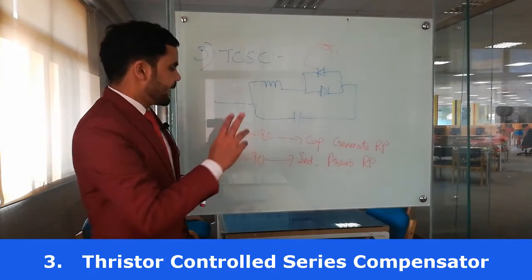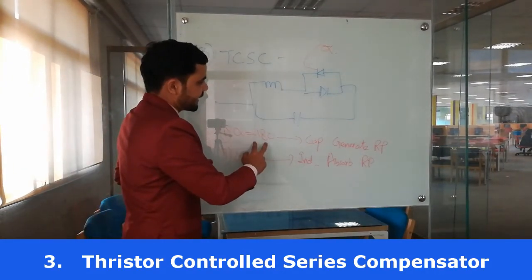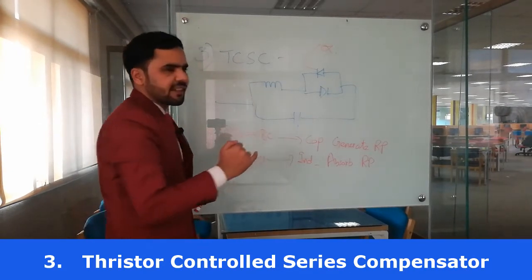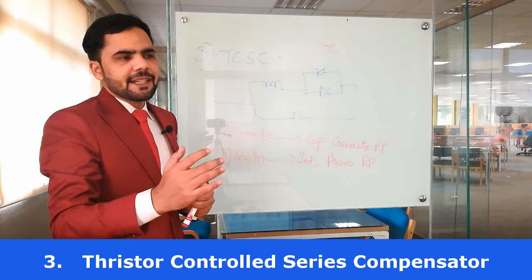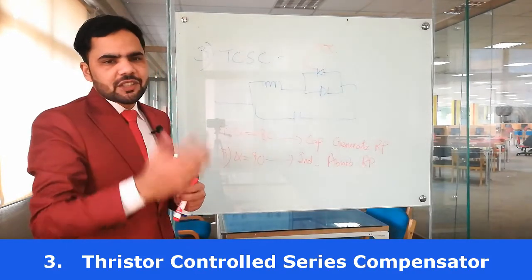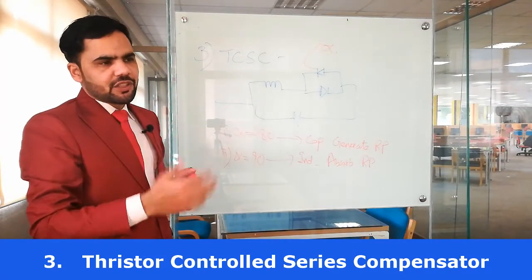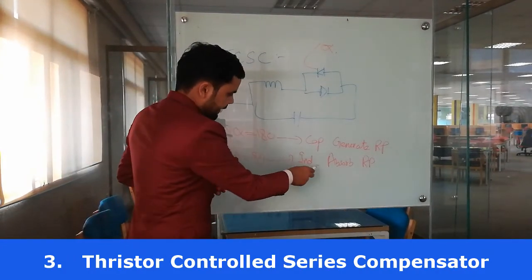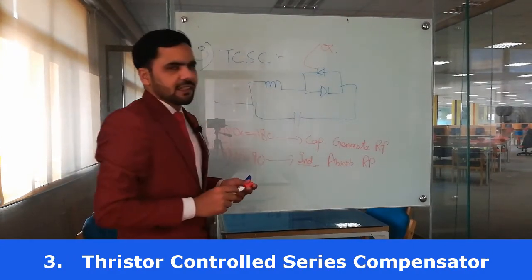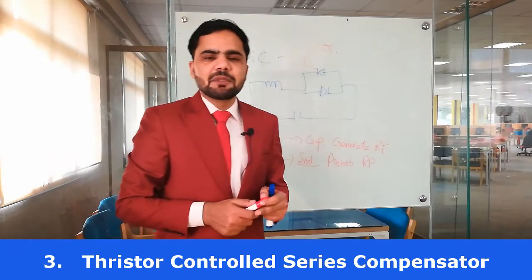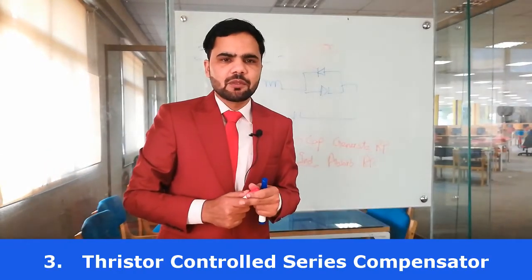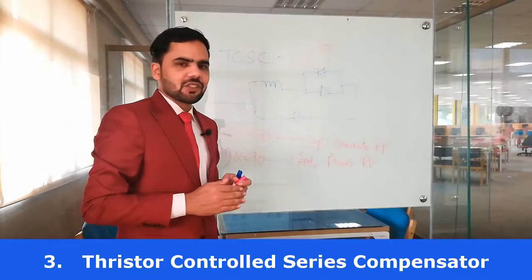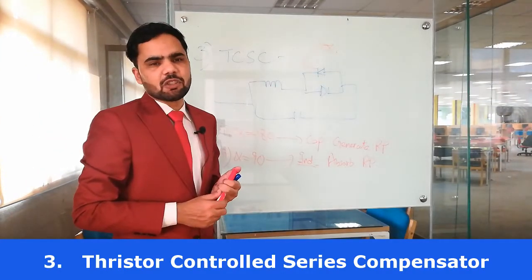If alpha is 180 degrees, the whole system works as a capacitor, provides reactive power, and eliminates the over-voltage or under-voltage condition. On the other hand, when it acts as an inductor, it absorbs reactive power and eliminates the over-voltage condition. That's why we are interested in FACTS devices to improve the stability of the power system.